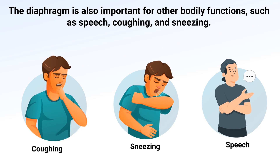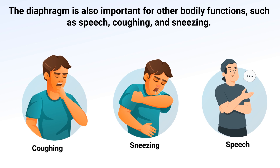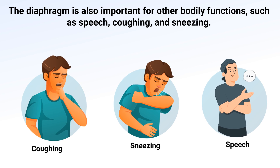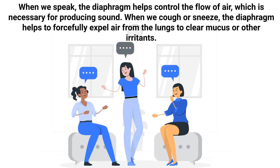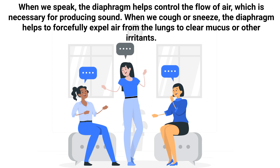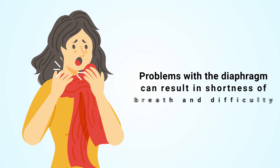The diaphragm is also important for other bodily functions such as speech, coughing, and sneezing. When we speak, the diaphragm helps control the flow of air, which is necessary for producing sound. When we cough or sneeze, the diaphragm helps to forcefully expel air from the lungs to clear mucus or other irritants.